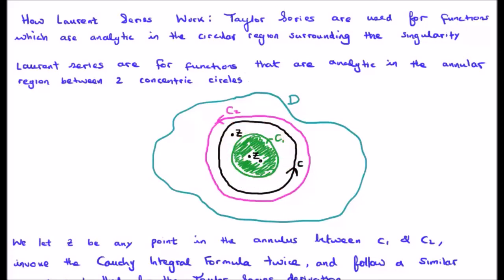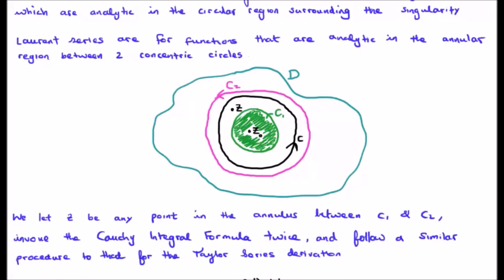With the Taylor series we could bring the path right the whole way down to z_0, and the derivatives exist the whole way through because the function is analytic at z_0. However for the Laurent series it's not analytic at z_0. So instead we consider an inner contour and an outer contour and look at the behavior between them. We let z be any point in the annulus between c1 and c2, where c1 is the inner contour. We invoke the Cauchy integral formula twice and follow a similar procedure to the Taylor series derivation.